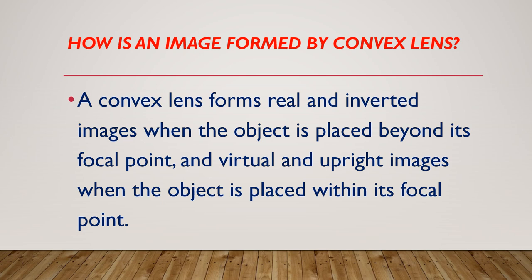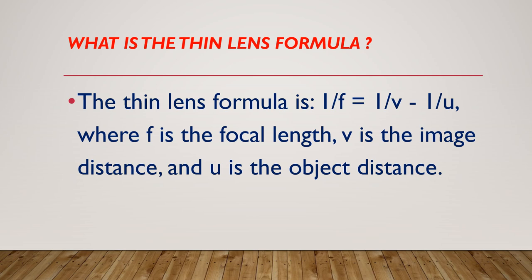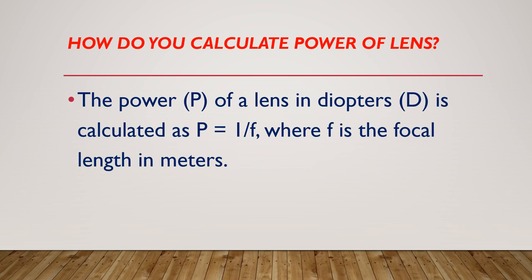What is the thin lens formula? The thin lens formula is 1/F = 1/V − 1/U, where F is the focal length, V is the image distance, and U is the object distance.